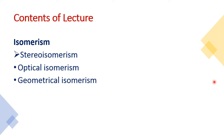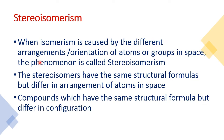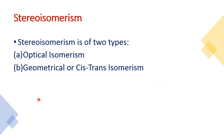Stereoisomerism is that isomerism in which molecules have the same structural formula and same molecular formula but differ in the arrangement of atoms in space. They only differ in the geometry of the molecule, and this geometry is called configuration. When isomerism is caused by different orientation of atoms or groups in space, that is called stereoisomerism. There are two kinds: optical isomerism and geometrical or cis-trans isomerism.